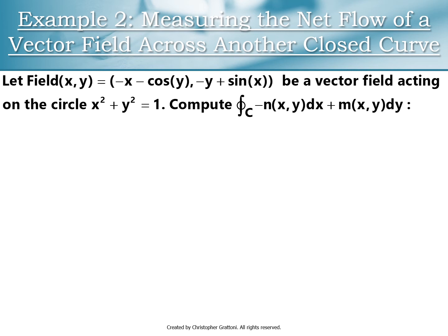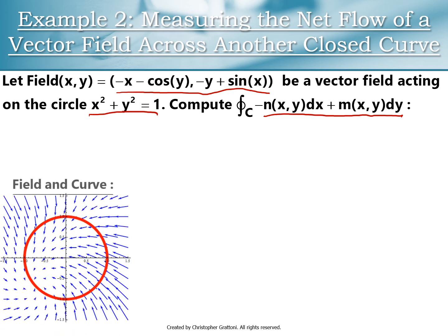Let's crunch the numbers on one more example. My curve is a unit circle, and here's my vector field — this is given information. I'm going to compute the net flow of my vector field across my closed curve. When I see the integral of negative N dx plus M dy, my standard interpretation is flow across — though there are other ways to look at it, we'll interpret it as flow across here.